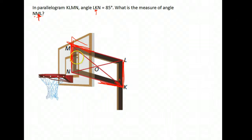If this angle is 85, what we want to decide in a parallelogram is are they opposite or consecutive? Because they have different properties depending. And since these are across the figure from one another, they are opposite angles. In a parallelogram, opposite angles are congruent. So if LKN is 85, NML would also be 85 degrees.